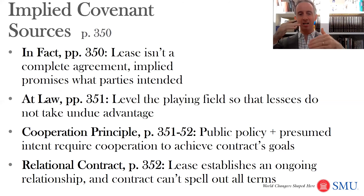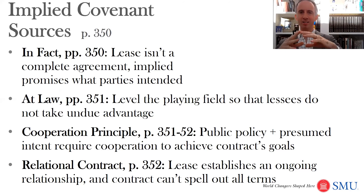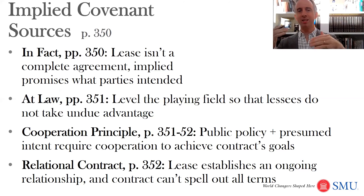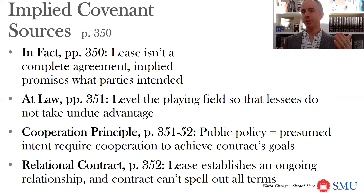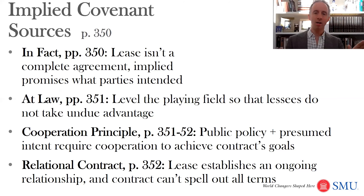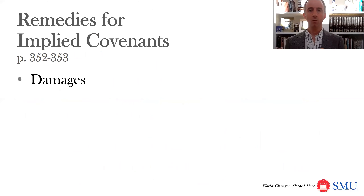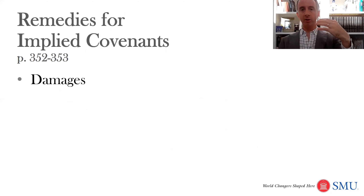A similar idea is that it's a relational contract — this is an ongoing relationship and a contract can't spell out all the terms. This is kind of a combination of the above theories: it's not a complete agreement, but there's an ongoing relationship, and we think it works best if we have these implied covenants. The open question then is: can I contract out of those? Can I say I don't want this duty to further explore, or the covenant to market?